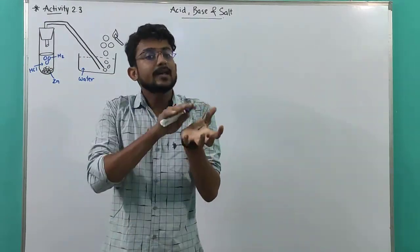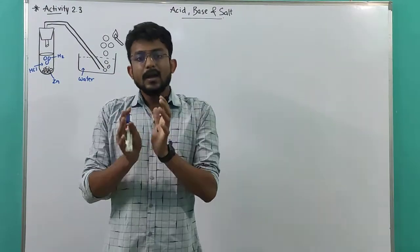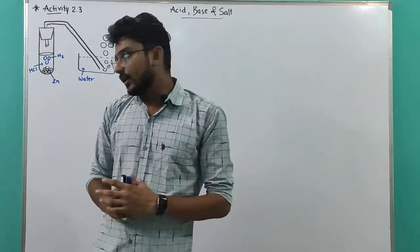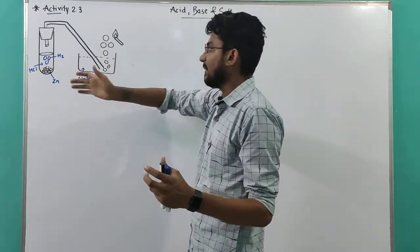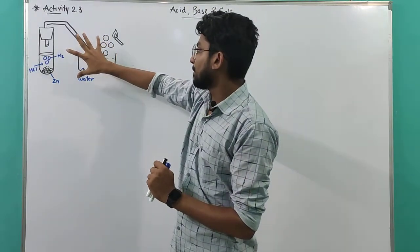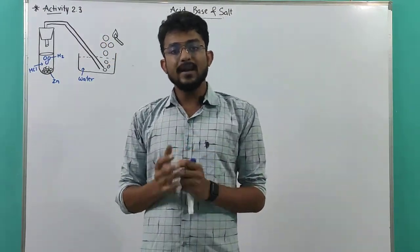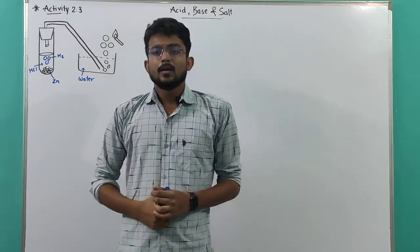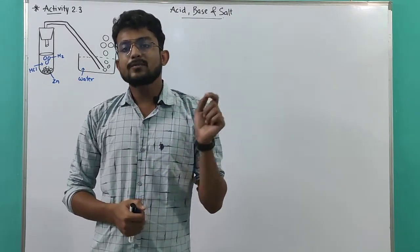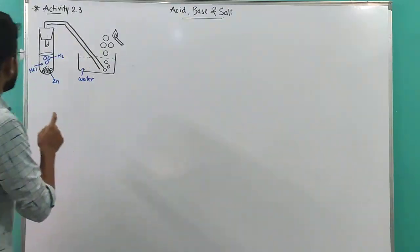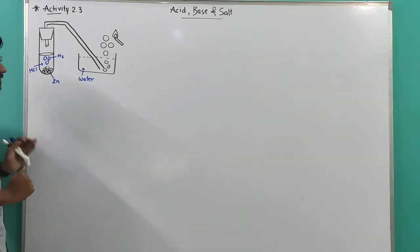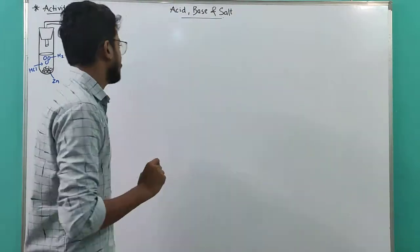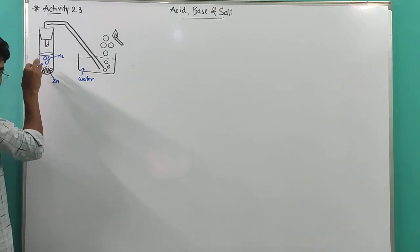When acid reacts with metal, let's do this activity. Set up the apparatus as shown in the figure in the textbook — we need to set up the laboratory setup. The second point says: take about 5 ml of dilute sulfuric acid. I have taken HCl here — you can also use sulfuric acid, doesn't matter. In a test tube, add a few pieces of zinc granules.